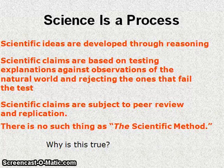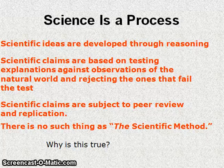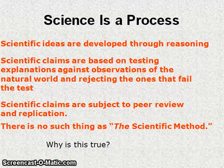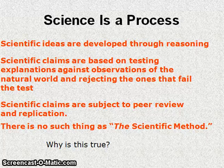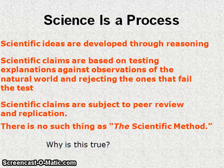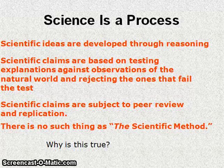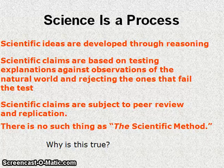Science is a process. Scientific ideas are developed through reasoning. Scientific claims are based on testing explanations against observations of the natural world and — very importantly — rejecting the ones that fail the test. If scientific testing shows that claims or ideas are inaccurate, we need to reject those. Scientific claims are also subject to peer review and replication. There is no such thing as "the scientific method."